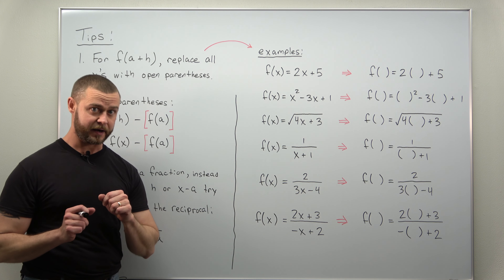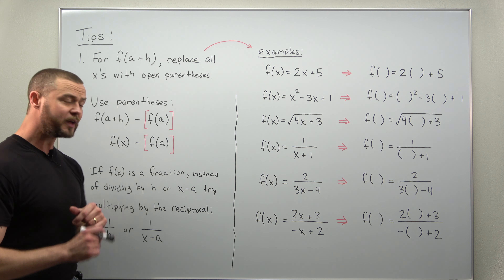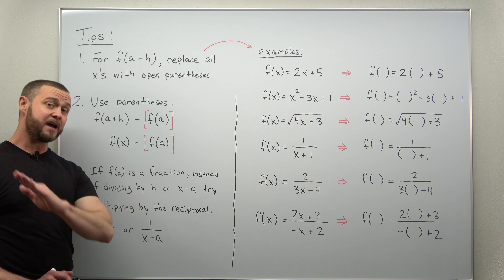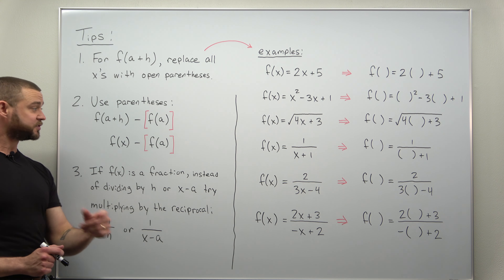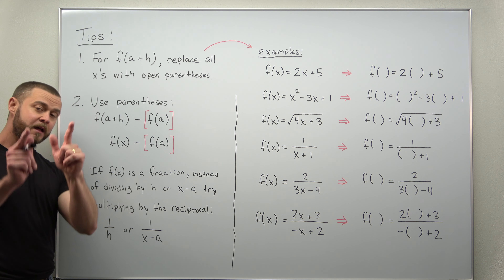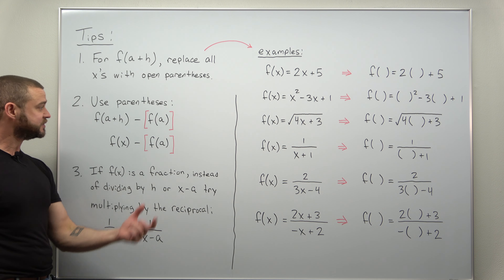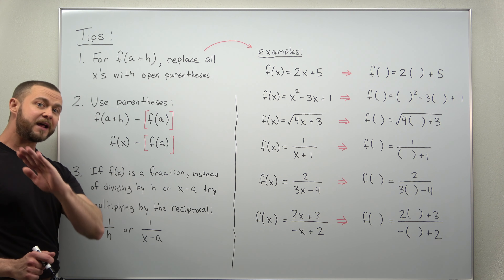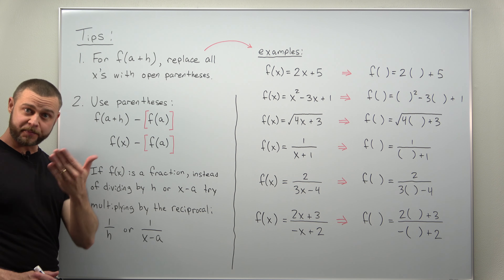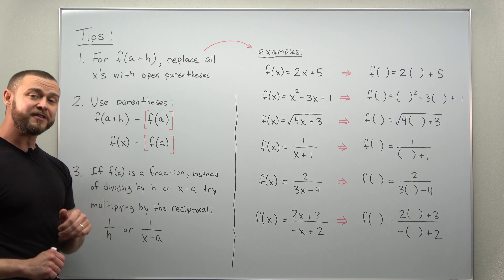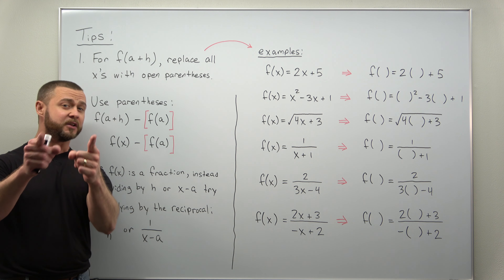That first tip goes back to pre-calculus ideas. The second tip clears up sign errors: the limit definitions involve subtracting, and a common mistake is forgetting that the subtraction sign distributes to everything that follows. When you subtract f of a, use a set of parentheses or brackets around it — that will remind you to distribute the negative into the parentheses. Using parentheses is actually one of the best tips for the entire calculus sequence from Calc 1 all the way to differential equations.